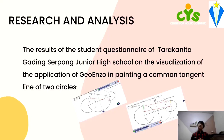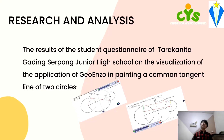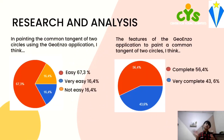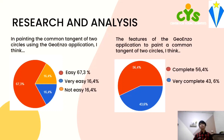Research and analysis: The student questionnaire of Tarakanita Gani Serpong Junior High School on the visualization of the application of geo-enzo in painting a common tension line of two circles. In this diagram, for painting the common tension of two circles using the geo-enzo application, students responded: easy 67.3%, very easy 16.4%, and not easy 16.4%.